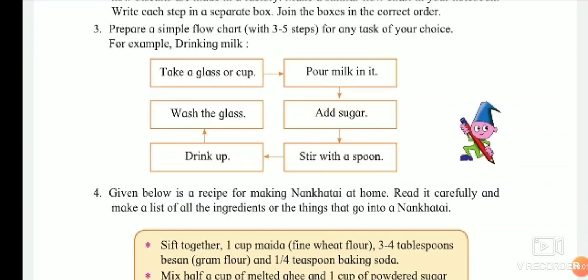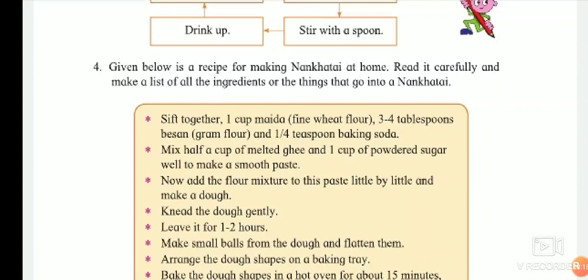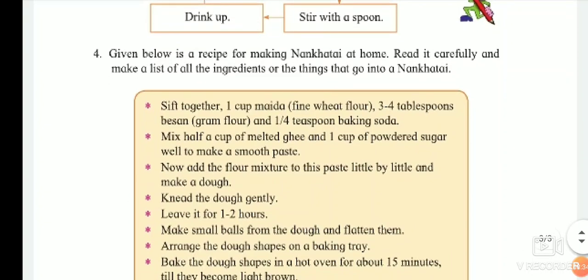Exercise 4: Given below is a recipe for making Naan Khatai at home. Read it carefully and make a list of all the ingredients. First, sift together one cup maida (fine wheat flour), three to four tablespoons besan (gram flour), and one-fourth teaspoon baking soda. Second, mix half a cup of melted ghee and one cup of powdered sugar well to make a smooth paste.